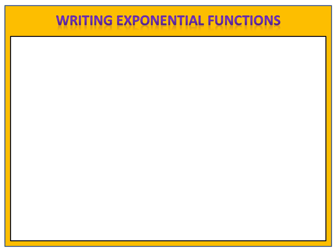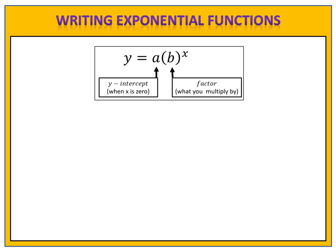In this lesson we're going to learn how to write an exponential function from an input and output table. An exponential function is a function whose exponent is a variable. It takes on the form y equals a times b to the x power, where a represents the y-intercept — the value of y when x is zero — and b represents the factor, or the number that you multiply by.